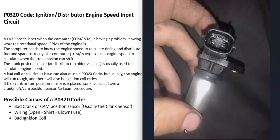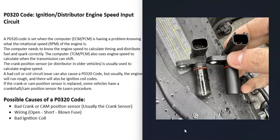The first possible cause of a P0320 code is a bad crankshaft or camshaft position sensor. Usually it's going to be the crank sensor, but keep in mind the camshaft position sensor can also be tied into the circuit of the crankshaft position sensor. So while usually it's a bad crank sensor, on some vehicles it can also be a bad camshaft position sensor. There are YouTube videos on how to test these sensors — I'll put a link in the description.